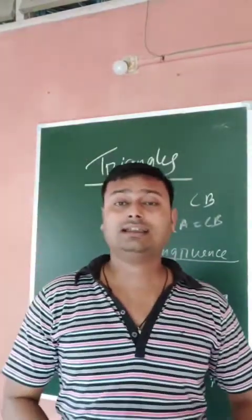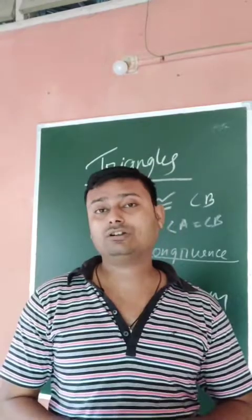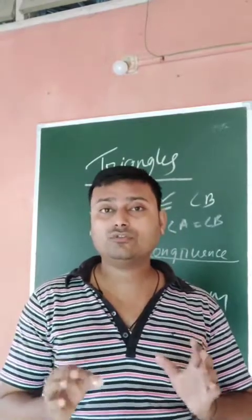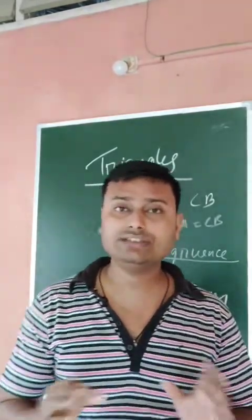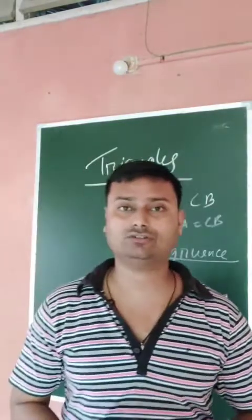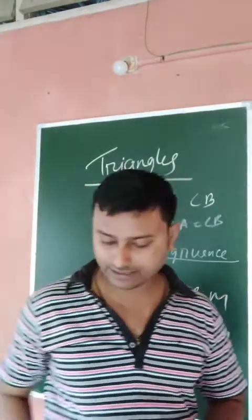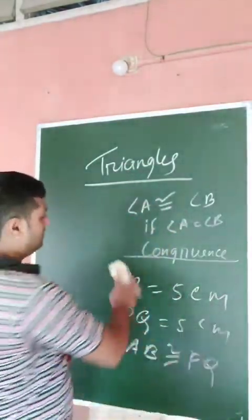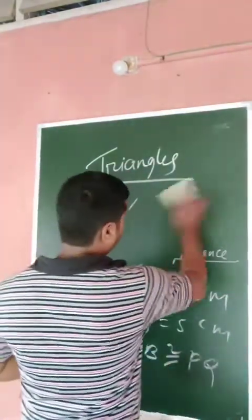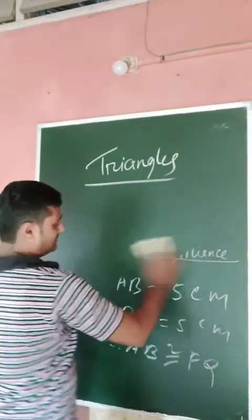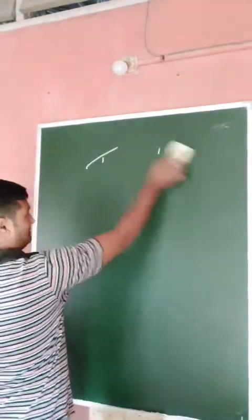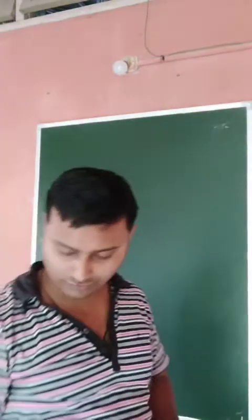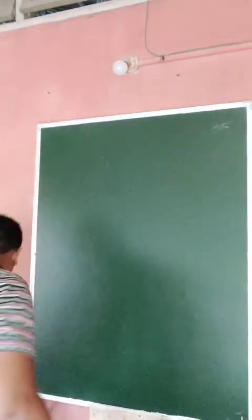Now in class 9, you have to learn about the congruence of two triangles. Two triangles are congruent to each other following some criteria. There are five criteria you have to learn, and in this first video I will discuss all the criteria for congruence of triangles.